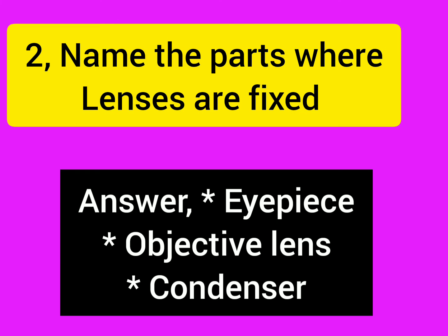Name the parts where lenses are fixed. Answer: Eyepiece, objective lens, and condenser.